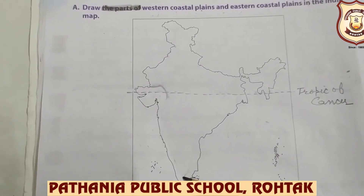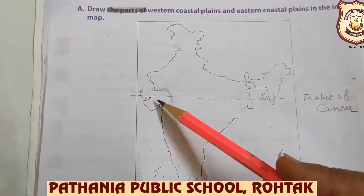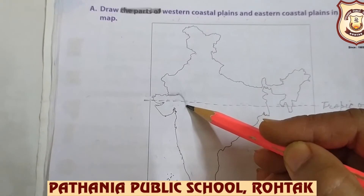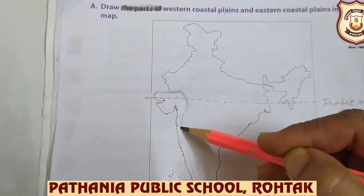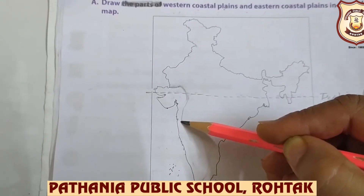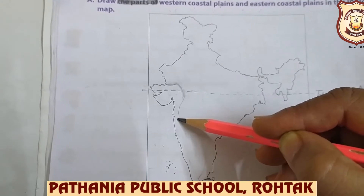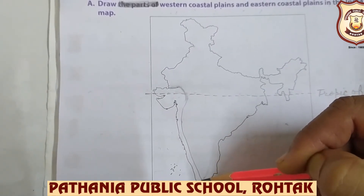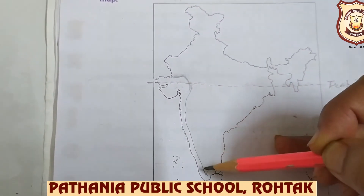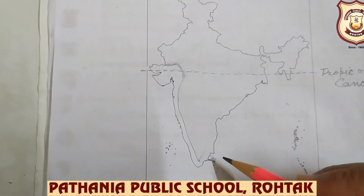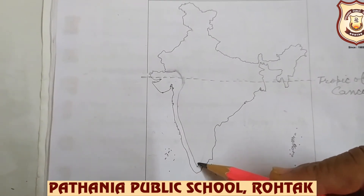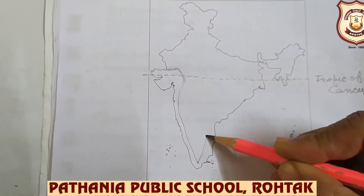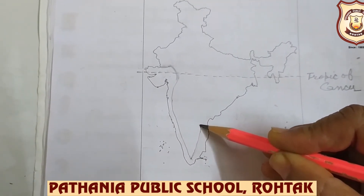Western Coastal Plains run straight from Gujarat in the north to Kanyakumari in the south. Draw a line — these are narrower compared to the Eastern Coastal Plains. Draw a line very close to the western edge. This part is Western Coastal Plains. Eastern Coastal Plains are wider if we compare with Western Coastal Plains.